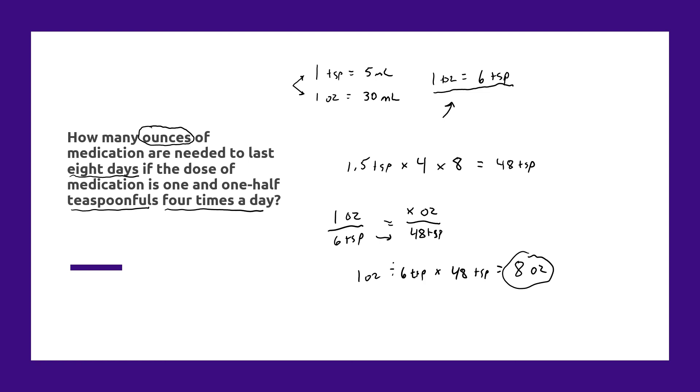I mean, you could have simply taken 48 and divided that by six. But still, it's easier to look at it in a proportion and be consistent.